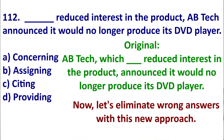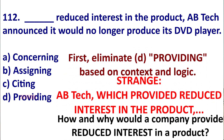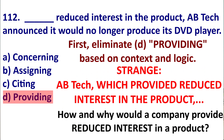Let's eliminate wrong answers using this approach. First, eliminate D based on logic: 'the company provided interest in the product.' How and why would a company provide less interest in their own product? It is not logical — the company is trying to gain more interest, not provide less. So we can eliminate D because it's not logical.